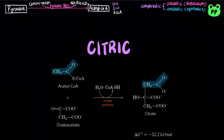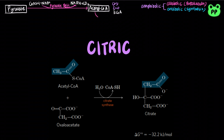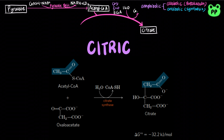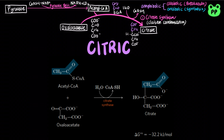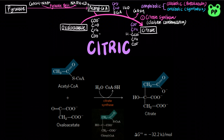The first reaction of the citric acid cycle involves the Claisen ester condensation of acetyl-CoA with oxaloacetate to form citrate, which is catalyzed by citrate synthase. The methyl carbon of the acetyl group is first joined to the carbonyl carbon of oxaloacetate, forming citryl-CoA, which is hydrolyzed to citrate, and free coenzyme A is released.